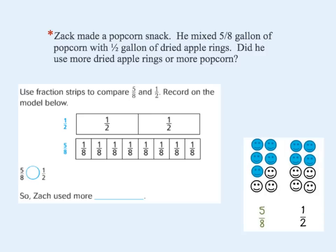Let's start by comparing a couple fractions together with this word problem. Zach made a popcorn snack. He mixed five-eighths gallon of popcorn with one-half gallon of dried apple rings. Did he use more dried apple rings or more popcorn? This is what we're trying to figure out.